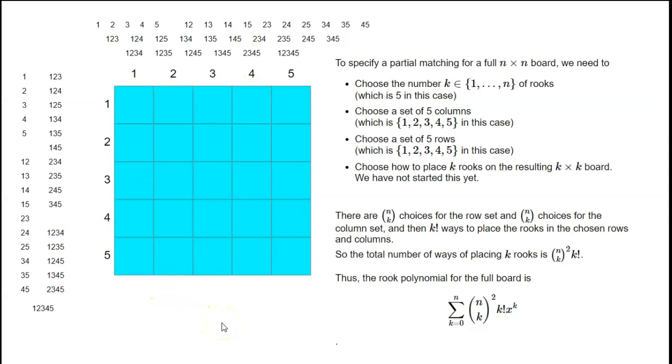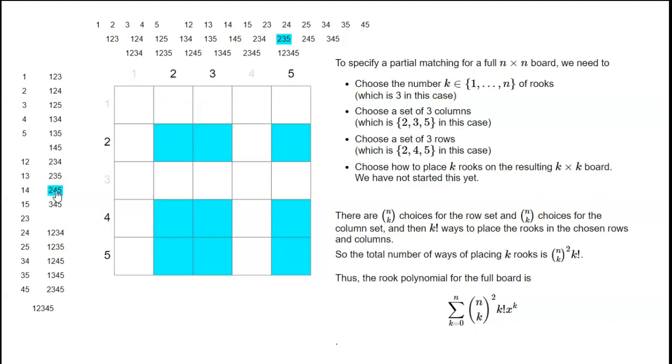The three rooks have to go in three different columns. Let's choose which columns we're going to put them in: columns 2, 3, and 5. Then we choose which rows: rows 2, 4, and 5.